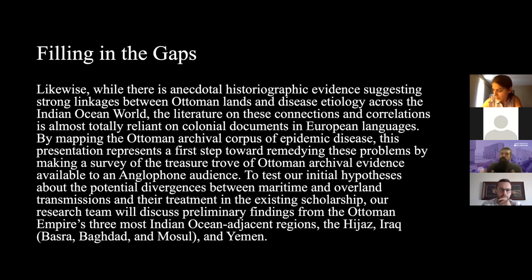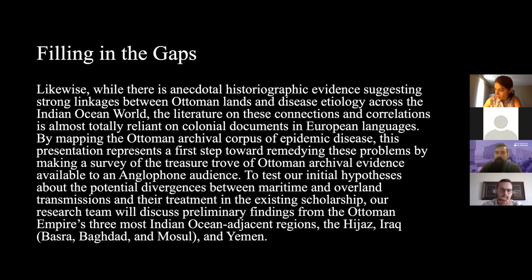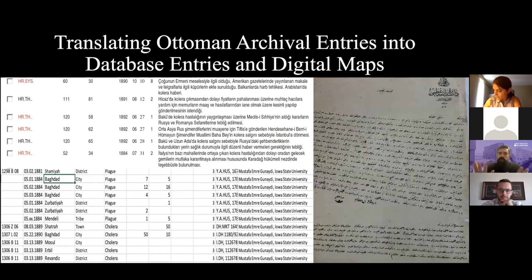To do this, we focused on areas in the Ottoman Empire that were Indian Ocean adjacent — areas most likely to be affected by disease flows coming out of the Indian Ocean and their contact with the subcontinent. We looked at the Hejaz, Iraq — including the Ottoman provinces of Basra, Baghdad, and Mosul — Yemen, and adjacent areas of Kurdistan.